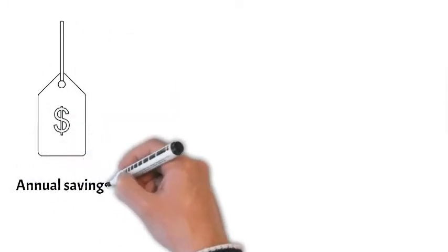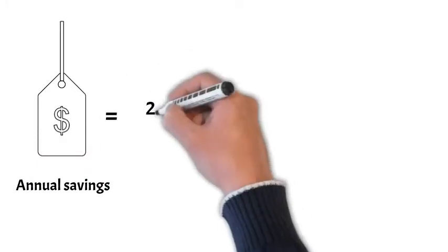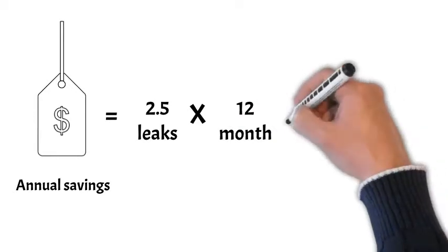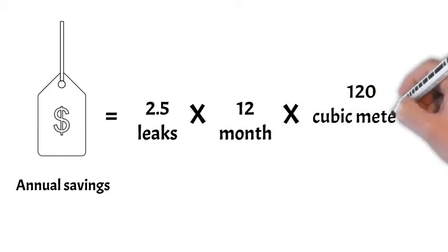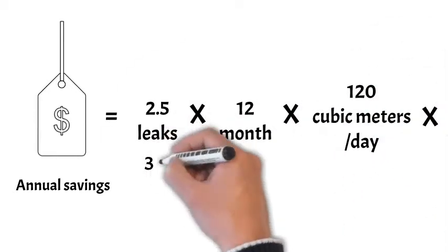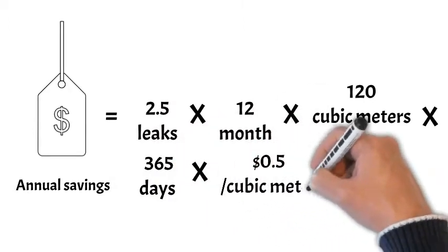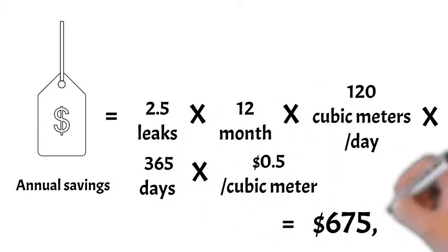Continuing with our example, the annual saving due to water loss reduction is 2.5 leaks per month times 12 months times 120 cubic meters per day times 365 days times 50 cents per cubic meter, which comes to $675,000 saved annually.